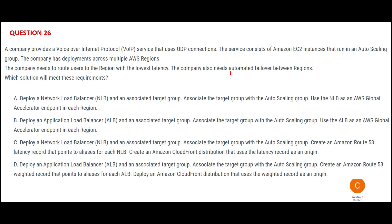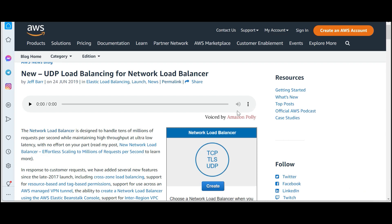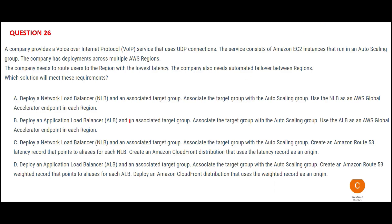In this question, it is talking about a wire service that uses UDP connections. UDP means Network Load Balancer — it is not an ALB. So any option that has an ALB is wrong, and we can eliminate two options right away. That leaves us with two NLB options: A and C.